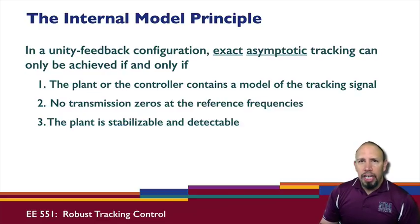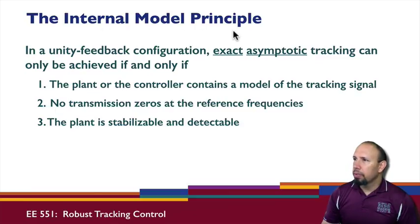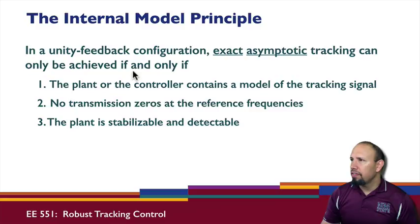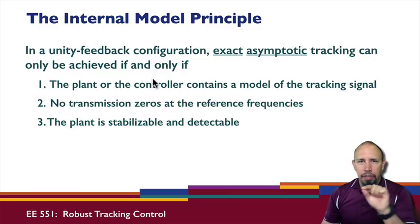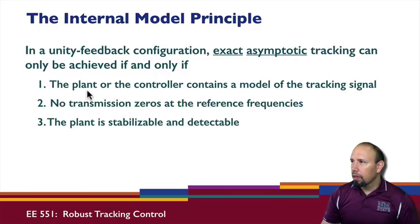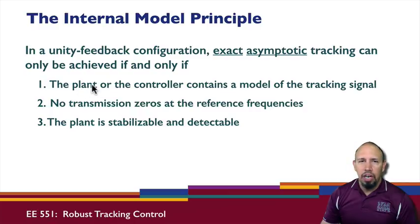This approach involves the internal model principle. In a unity feedback configuration, exact asymptotic tracking can be achieved if and only if three conditions are satisfied. The first is that the plant or controller must contain a model of the tracking signal — in general, our plant will not include this, so our controller must.